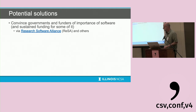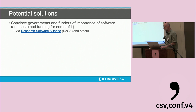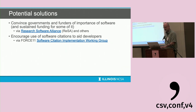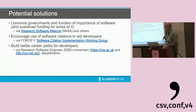Some potential solutions: we can try to convince governments and funders of the importance of software and sustained funding. The Research Software Alliance is a group trying to do this in a unified way across different governments. Software citations can give developers credit in a way that matches what they want in academia — the FORCE11 Software Citation Implementation Group is working on this. We could also build better career paths for developers through the Research Software Engineer movement, which is mostly in the UK but growing in the US.